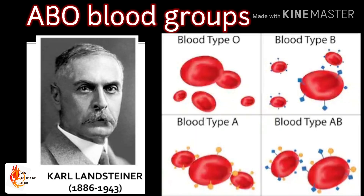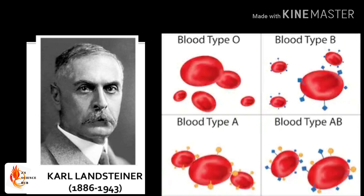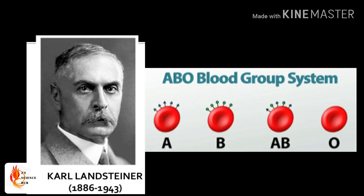ABO blood types were discovered in 1900 by Dr. Karl Landsteiner at the University of Vienna. He pondered why some patients die as a result of blood transfusions and others did not. So he made research on this and found out that there are different blood groups present in humans.